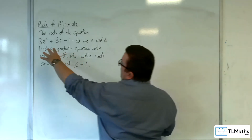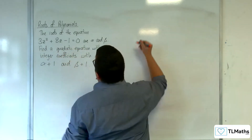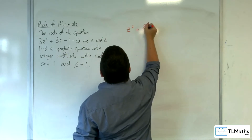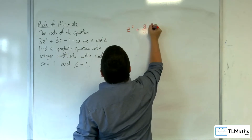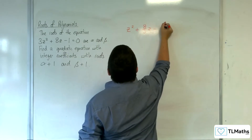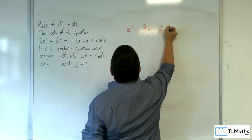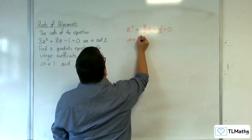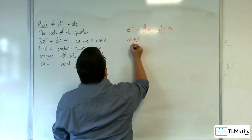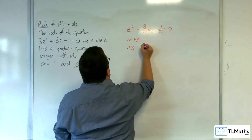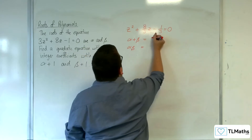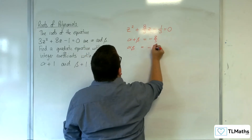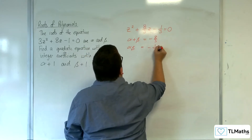So the first thing you're going to want to do is divide through by 3. So z squared plus 8 thirds z take away 1 third equals 0, so you're able to read off the sum and product of the roots. So alpha plus beta is minus 8 thirds and alpha beta is minus 1 third.